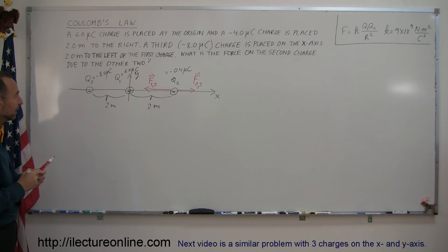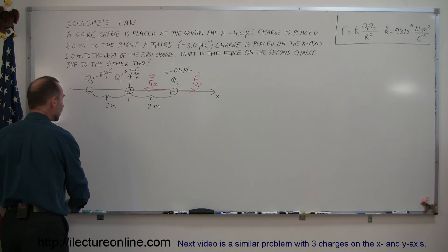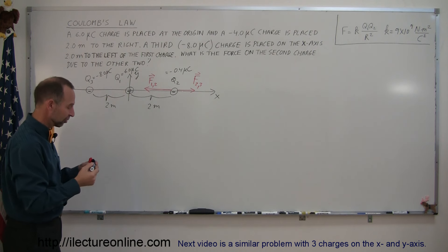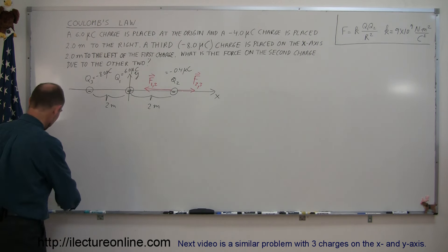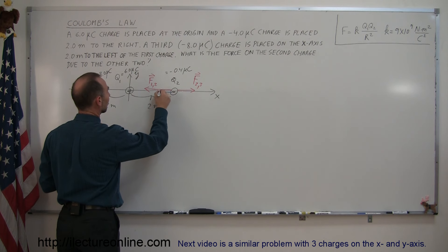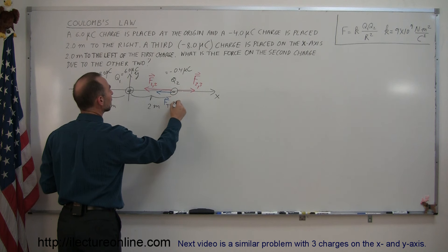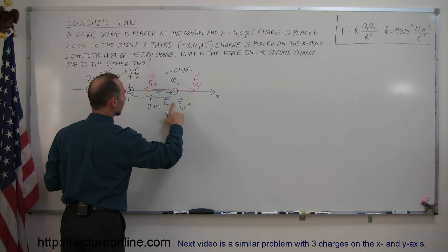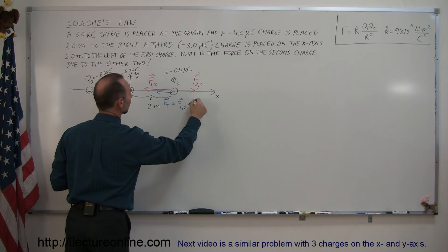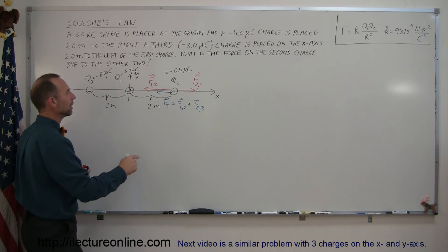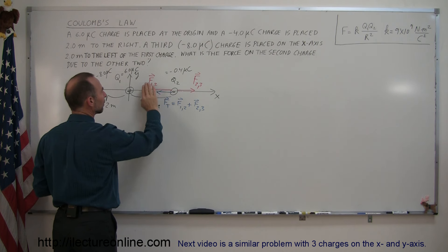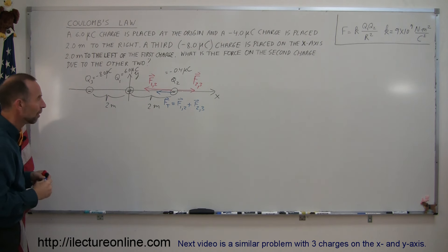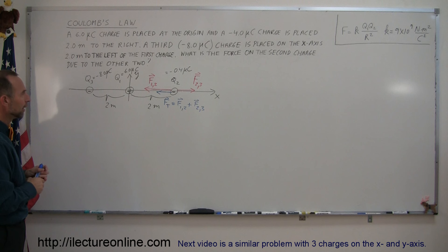Now we need to sum those two forces to find the net force on q2. Since this is all on a single line, we do a vector sum. The net total force F_total equals F12 plus F23. When I equate what this equals, F12 will become a negative quantity, but right now I'm simply representing this as the sum of the two vectors using positive values. First, draw the diagram, then draw the vectors, then sum them up. To do a vector sum, you find the magnitude of each vector first.